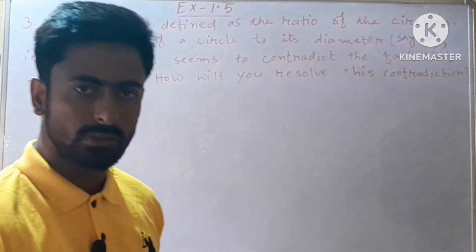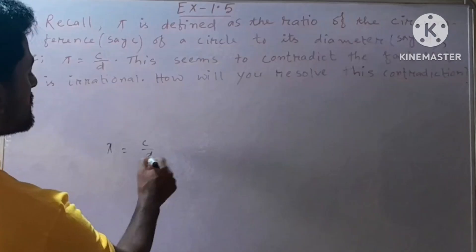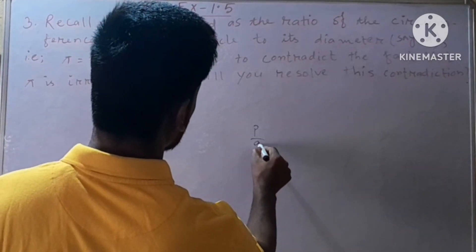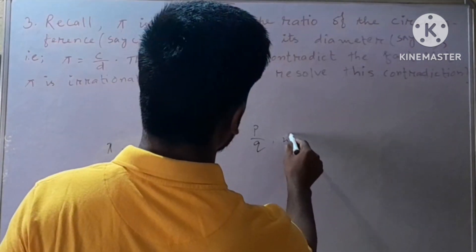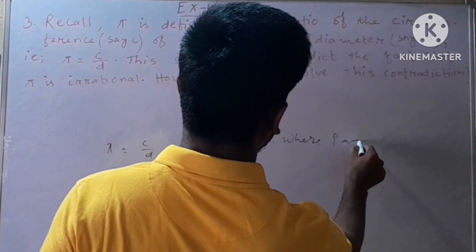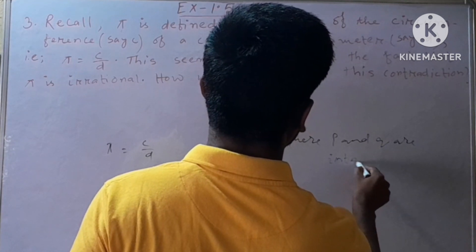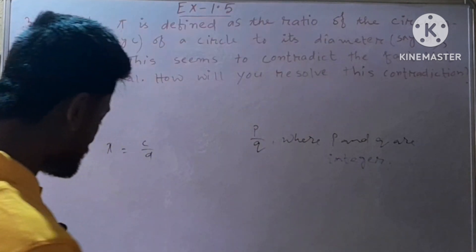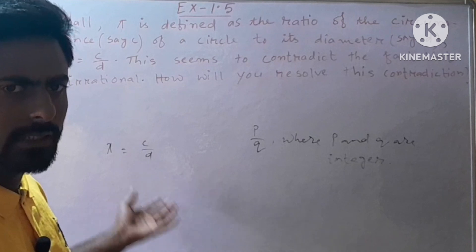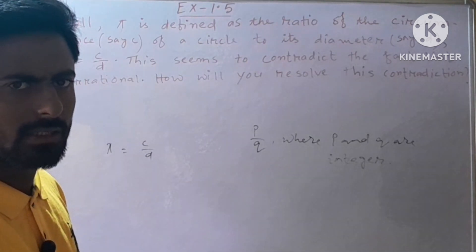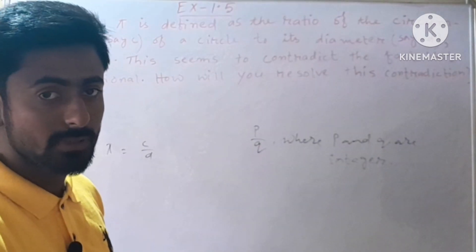That means, we all know that pi is an irrational number, but if we express pi as c divided by d, it is of the form p by q, which looks like a rational number. So if we write pi as c by d, then it may seem to be a rational number — a contradiction to the fact that pi is irrational. How can we solve this contradiction?